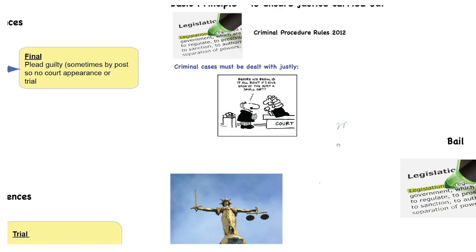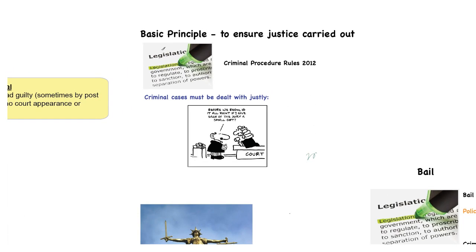Let's start by looking at the procedure - how do cases get to court. The first thing is this basic principle: the procedure has to ensure that justice is carried out and that criminal cases especially must be dealt with justly. We all as members of society have to be comfortable that if we find ourselves in the criminal court system, no matter where we are or who is deciding our guilt or innocence, that will be done fairly and justly. If that doesn't happen, the whole faith in the system collapses.